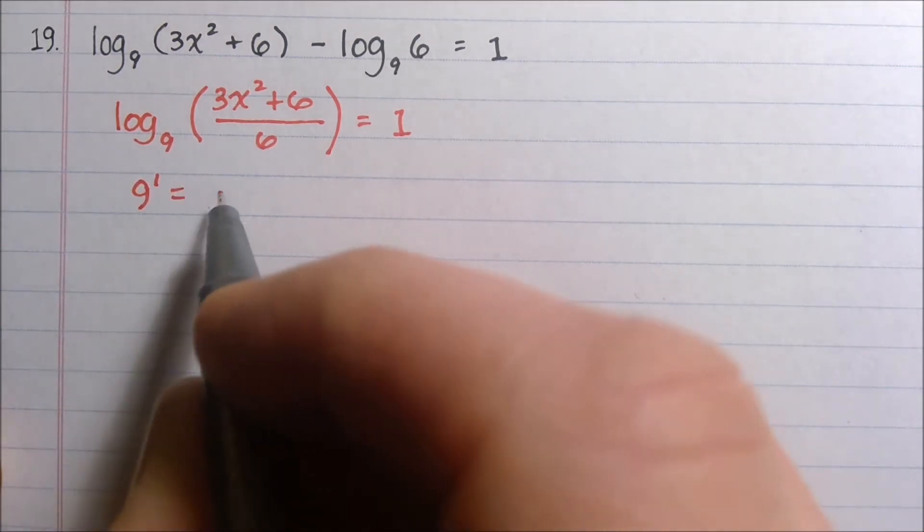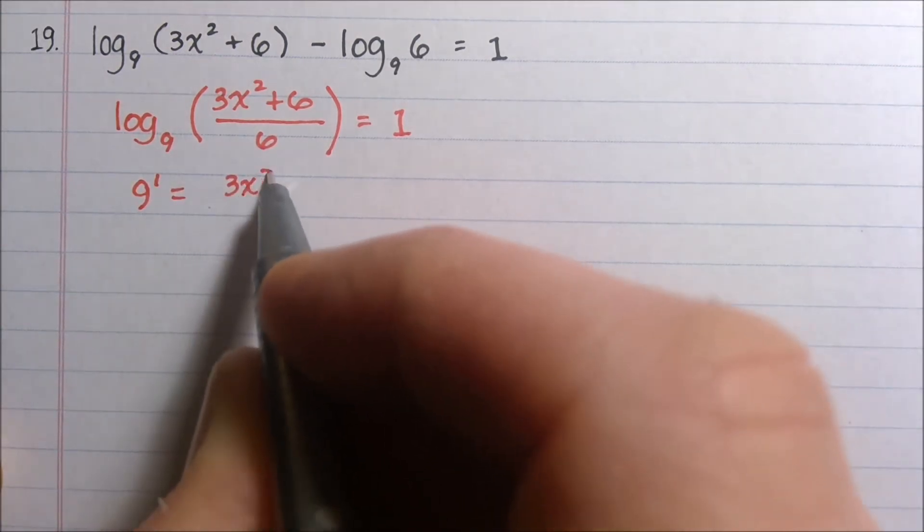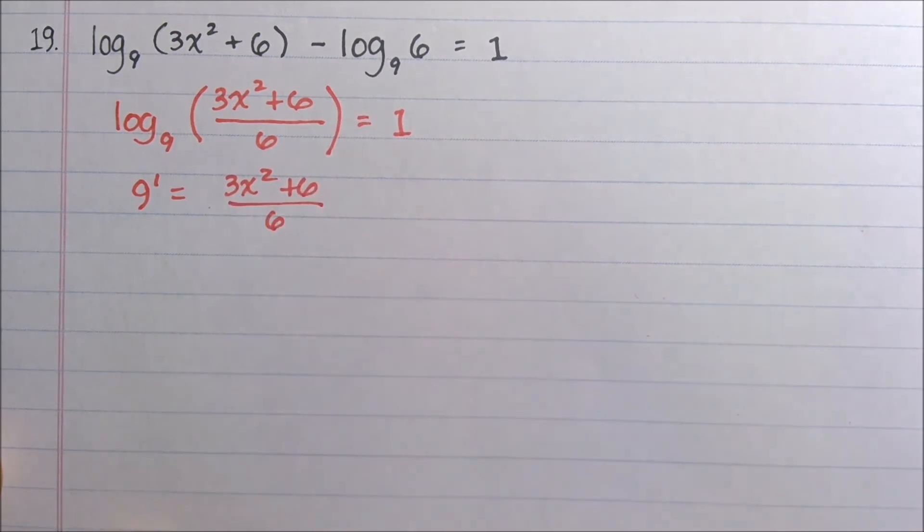9 to the 1st equals 3x squared plus 6 over 6.